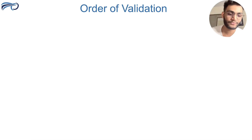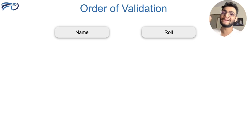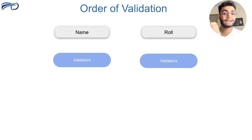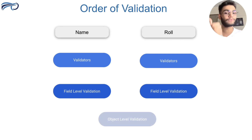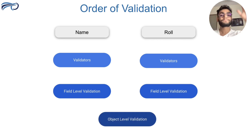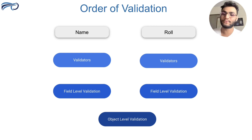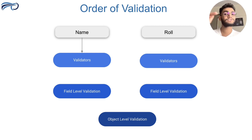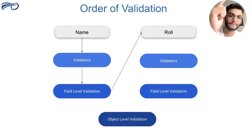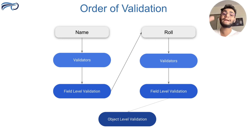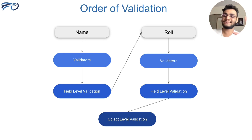Let's assume we have two fields: name and role, and all fields have validators, field validation, and object validation. Whichever field is written first, validation starts there. So for the name field written first: name validators run first, then field validation for name. Then it moves to the role field: role validators run, then role field validation. Finally, object-level validation runs at the end.